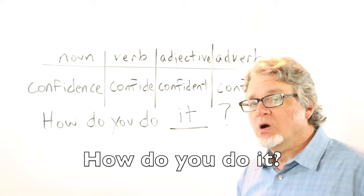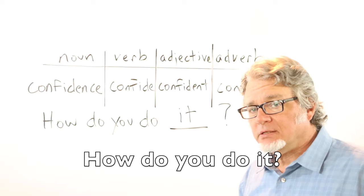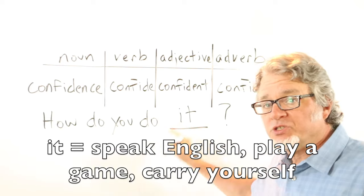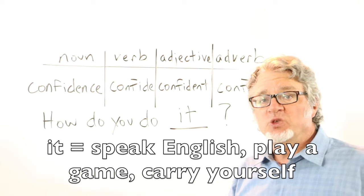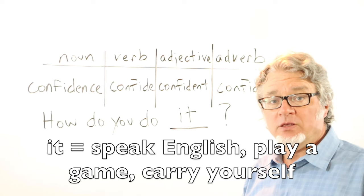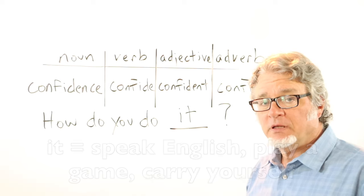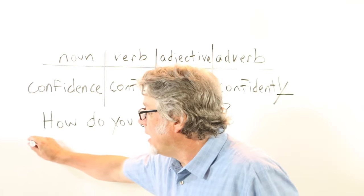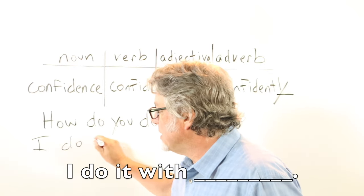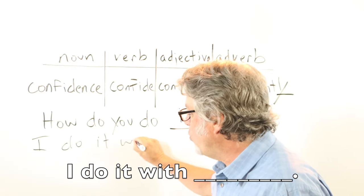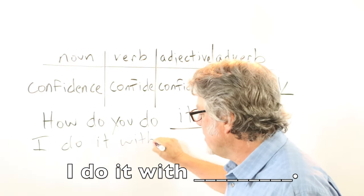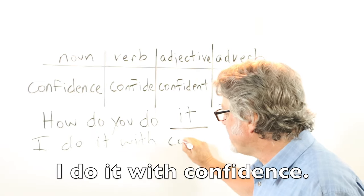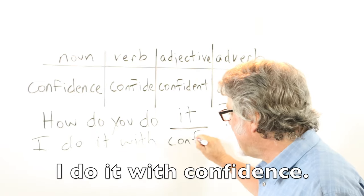'How do you do it?' This can represent the way that you speak English, the way that you play a game, or the way that you carry yourself. To answer the question: I do it with confidence — and here is the noun, confidence.